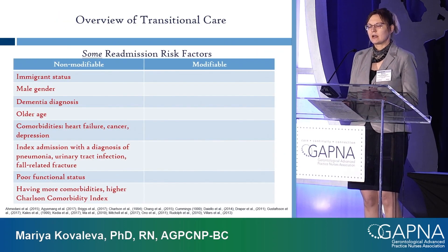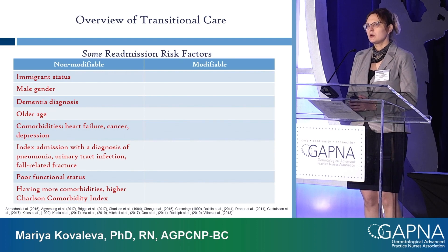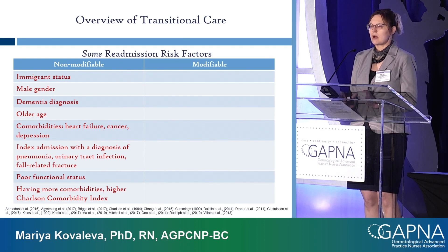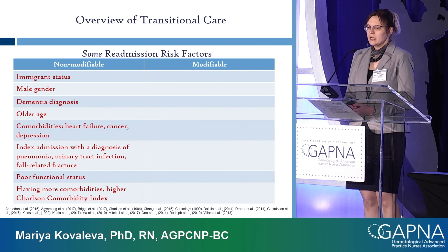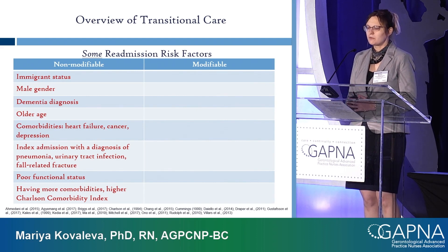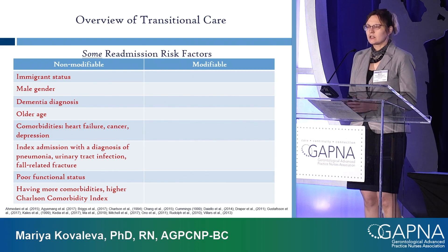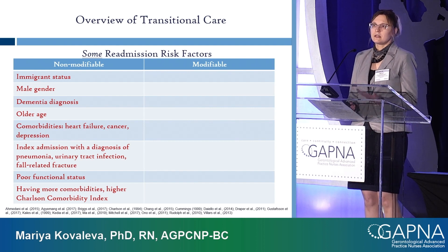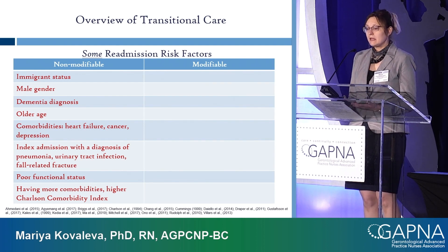My area is dementia — I specifically work with people living with dementia. In 2019 there was a systematic review on various factors causing people with dementia to get readmitted. I grouped factors into non-modifiable and modifiable. Non-modifiable factors include dementia itself, immigrant status, being male, older age, comorbidities like heart failure and cancer, depression, index admission for things like pneumonia or UTI, fall-related fractures, and poor functional status.